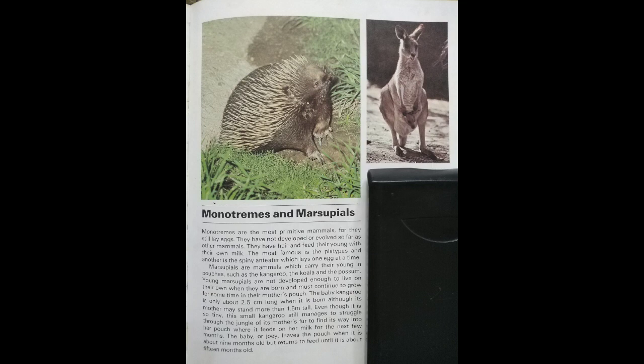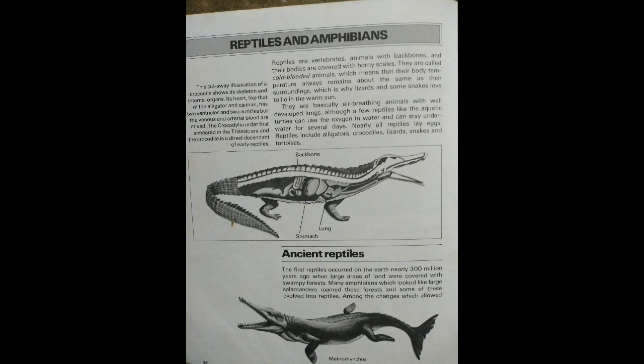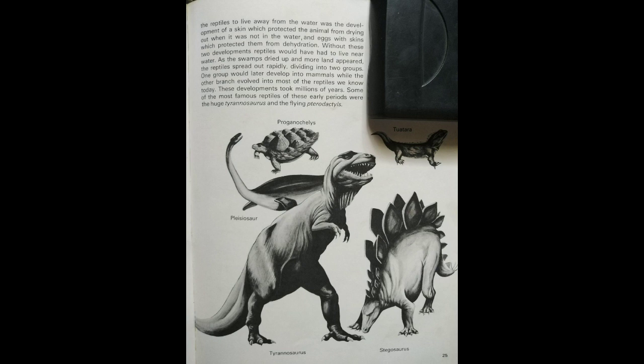This cutaway illustration of a crocodile shows its skeleton and internal organs. Its heart, like that of the alligator and caiman, has two ventricles and two auricles, but the venous and arterial blood are mixed. The crocodilia order first appeared in the Triassic era, and the crocodile is a direct descendant of early reptiles. The ancient reptiles known as dinosaurs were enormous and included the largest animals that have ever lived. Most dinosaurs became extinct in the Cretaceous era, 70 million years ago, when the Earth's crust was undergoing great upheavals.